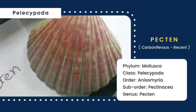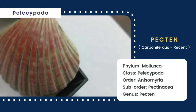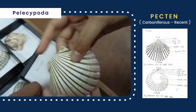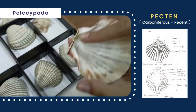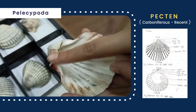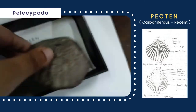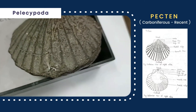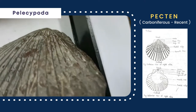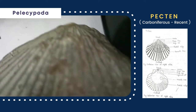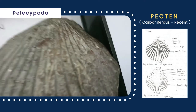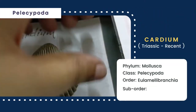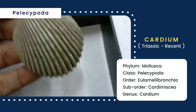Then you can see Pecten on your screen, whose shell is semicircular in shape and ornamented with coarse radial lines and growth lines. The hinge line is long and straight with a well-developed hinge. A central ligament pit, kind of triangular, is present. The margin is crenulated and the umbo is present.